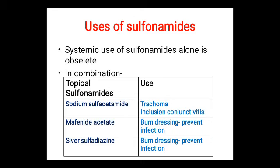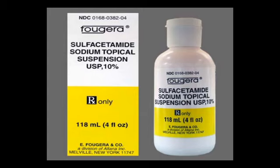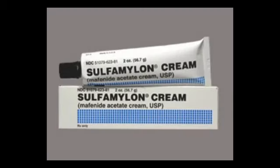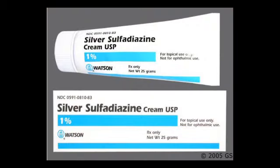Uses of topical sulfonamides: sodium sulfacetamide is used in trachoma and inclusion conjunctivitis. Mafenide acetate is given for burn dressing to prevent infections. Silver sulfadiazine is also given for burn dressing to prevent infection. Pictures show sulfacetamide topical suspension, mafenide acetate cream, and silver sulfadiazine cream.